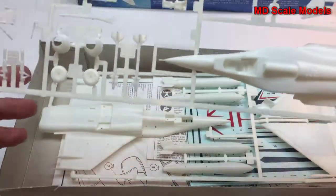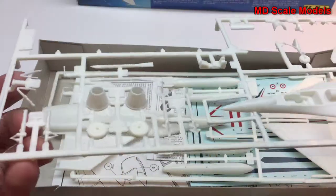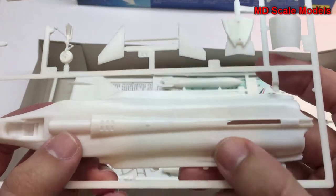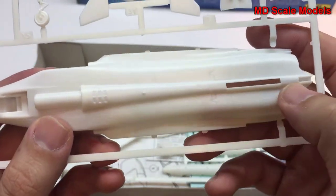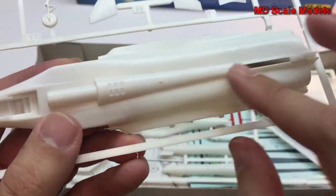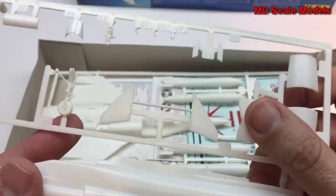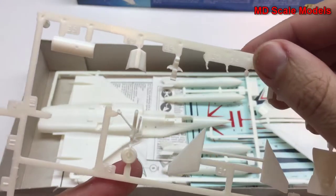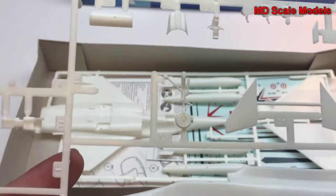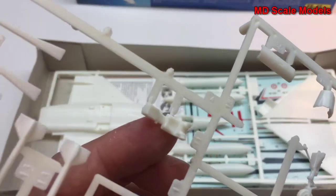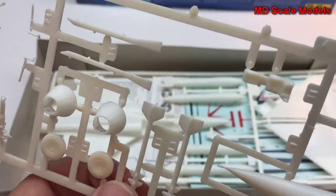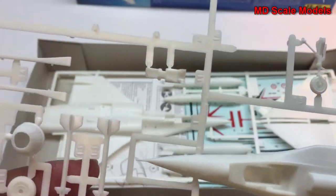two sprues. These have all raised panel lines with a fair amount of surface detail, though as I said most of them are raised. There are some very small parts - the seat, ejection seat, and missiles.